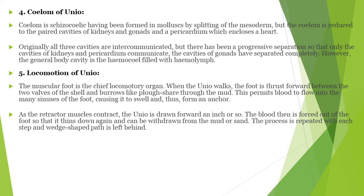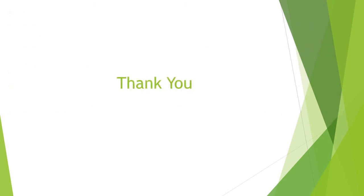Locomotion of Unio: the muscular foot is the chief locomotory organelle. When Unio moves, the foot is thrust forward between the two valves of the shell and burrows like a plough share through the mud. This permits blood to flow into the many tissues of the foot, causing it to swell and thus form an anchor. The foot movements — driven by retractor and protractor muscles acting as antagonists — are responsible for the main locomotion.